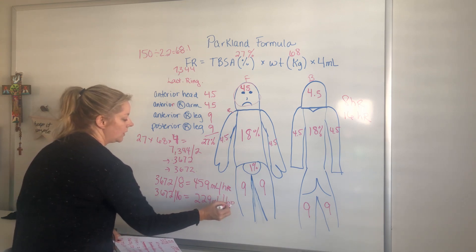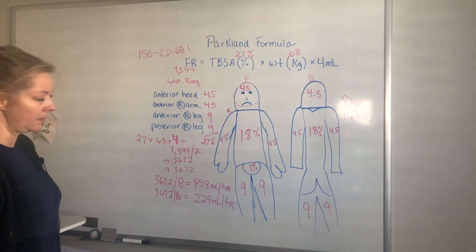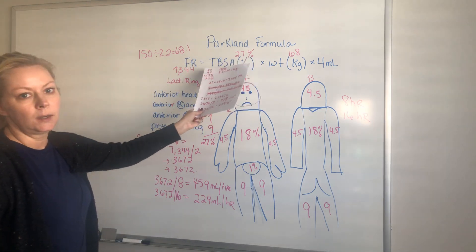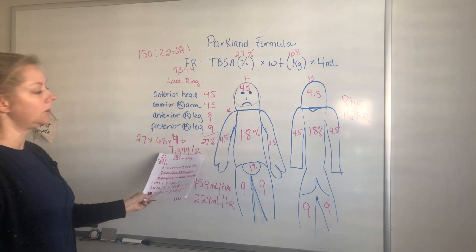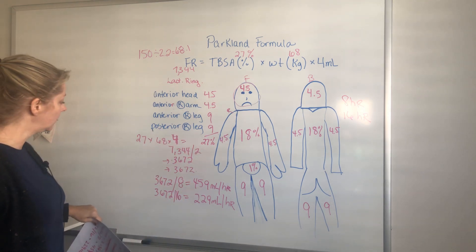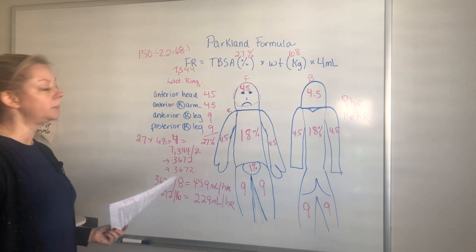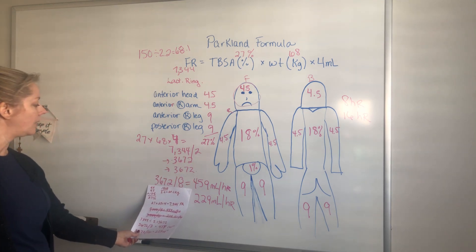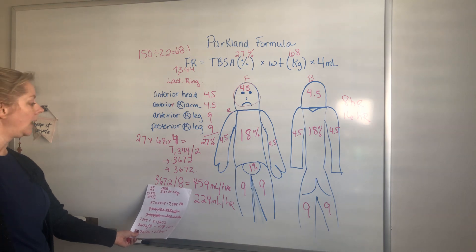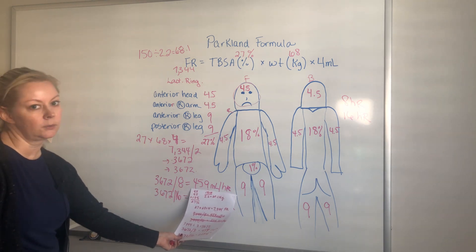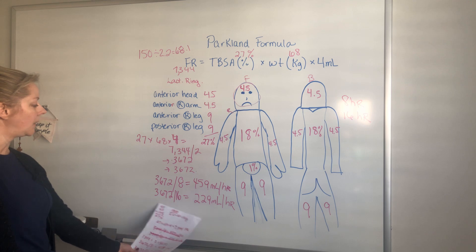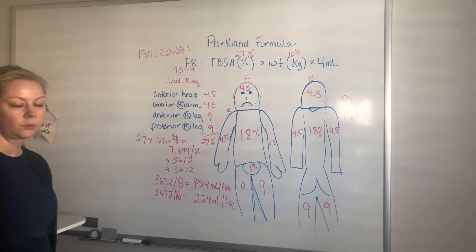So if a question asks how many mL or cc's per hour over the first eight hours, plug in your values, get your total fluid replacement, divide by two because half goes in over eight hours and the rest over the next 16 hours. Then take that half and divide by 8 to get your pump rate — 459 mL/hr for the first eight hours. If the question asks about the 16-hour rate, divide by 16 to get 229 mL/hr. I hope that helps.